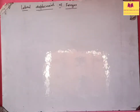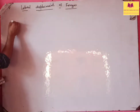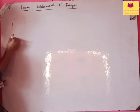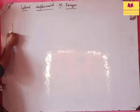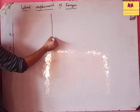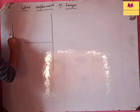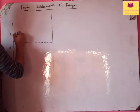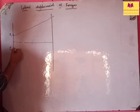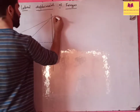Now coming to this important topic: lateral displacement of fringes. Last class mein humne Young's double slit experiment ke baare mein paada tha. So I will show you like this: agar humare paas yahan pe do slits hain, S1 and S2, and there is a screen right there. The light that travels from S1 will reach some point P on this screen, and light from S2 will also travel and reach that same point P.